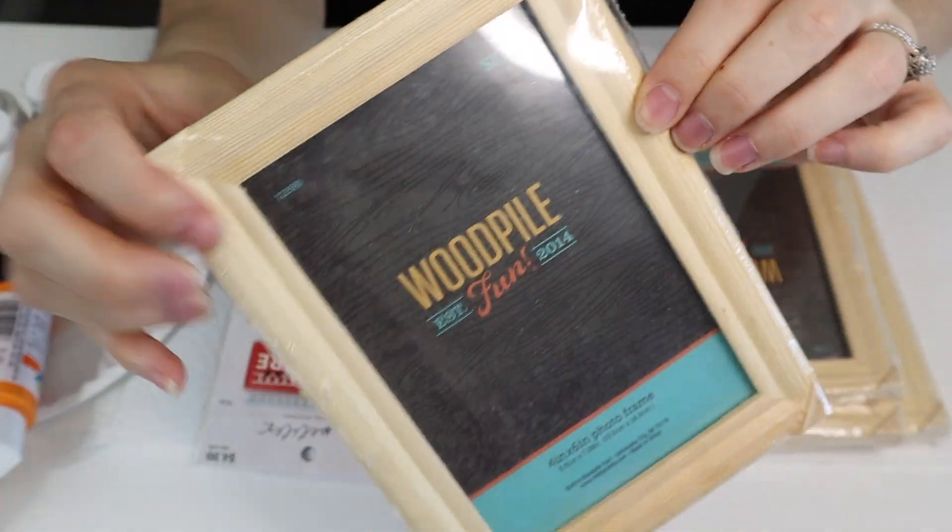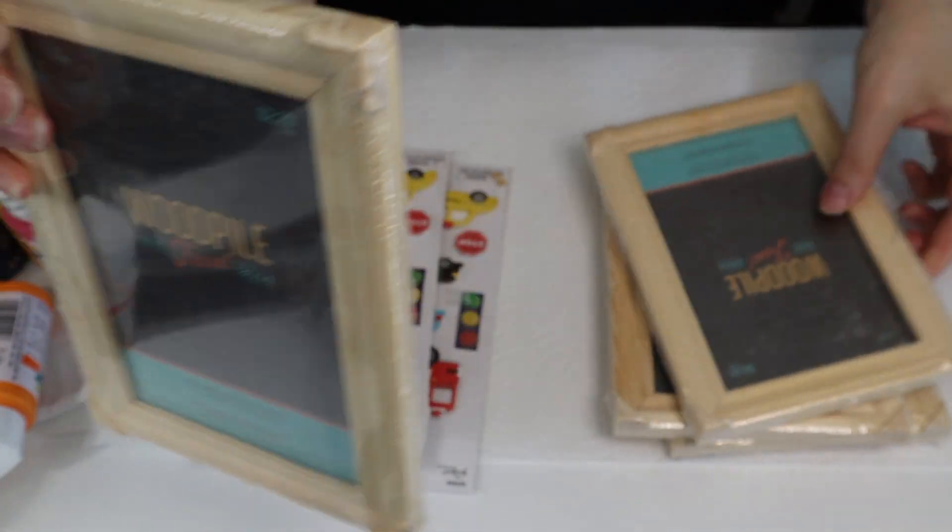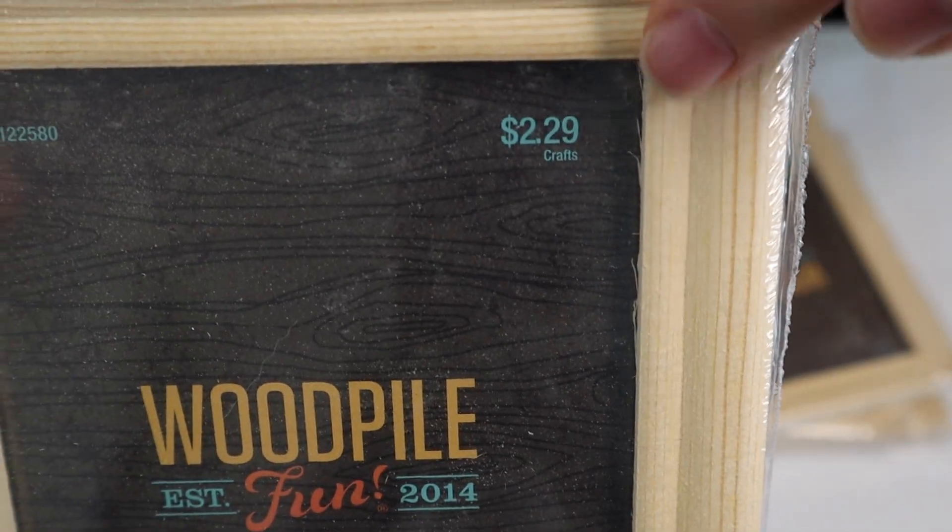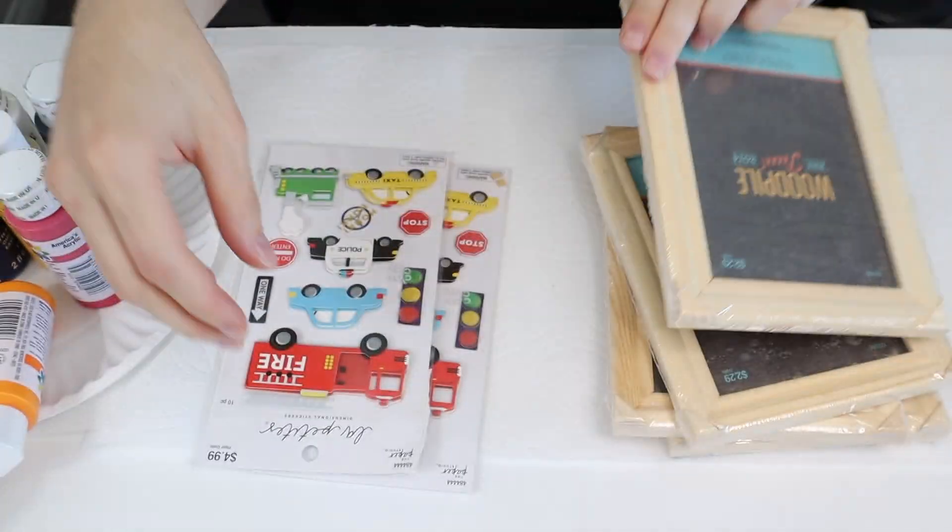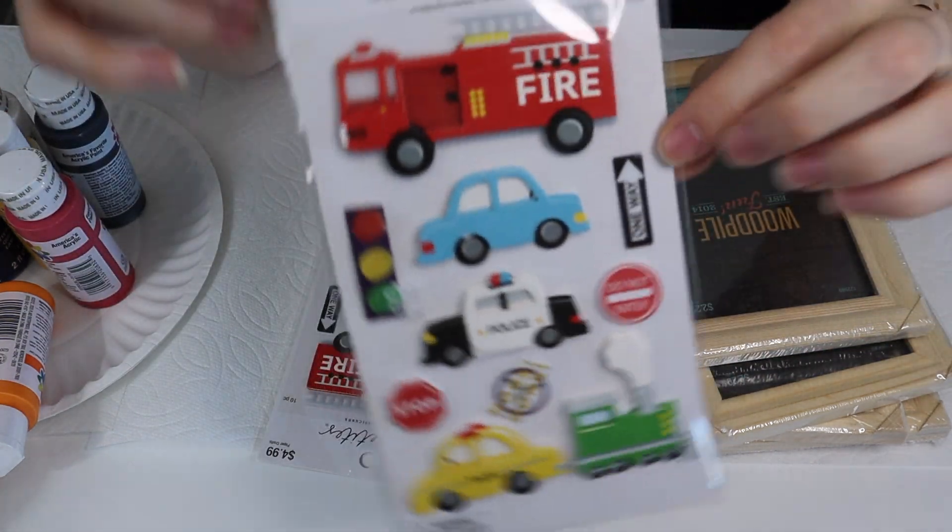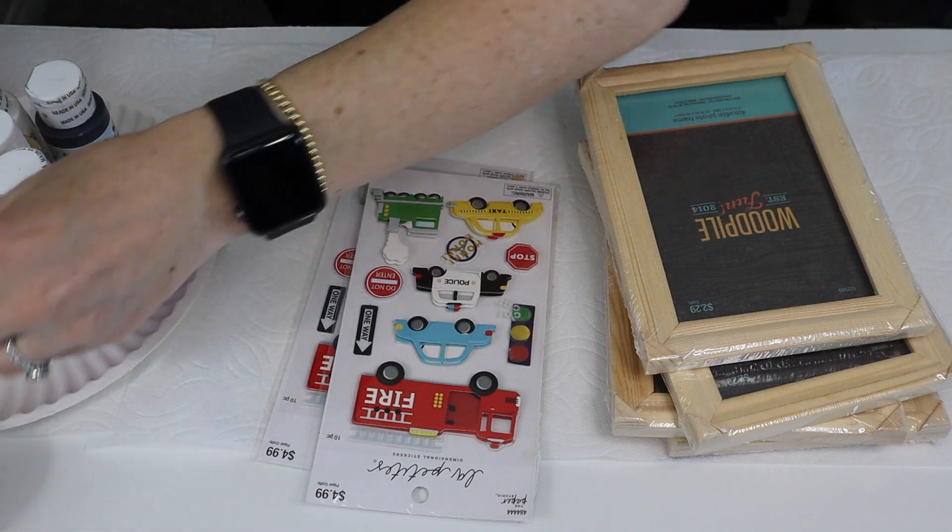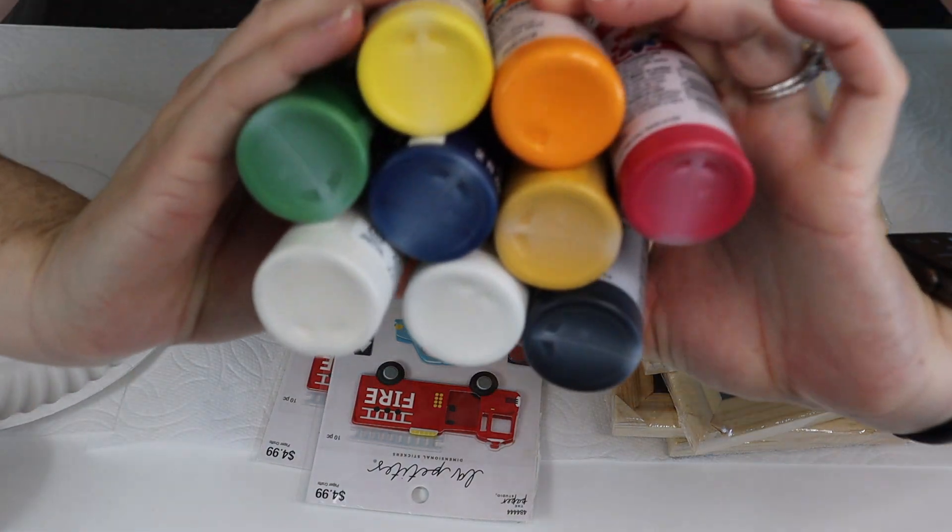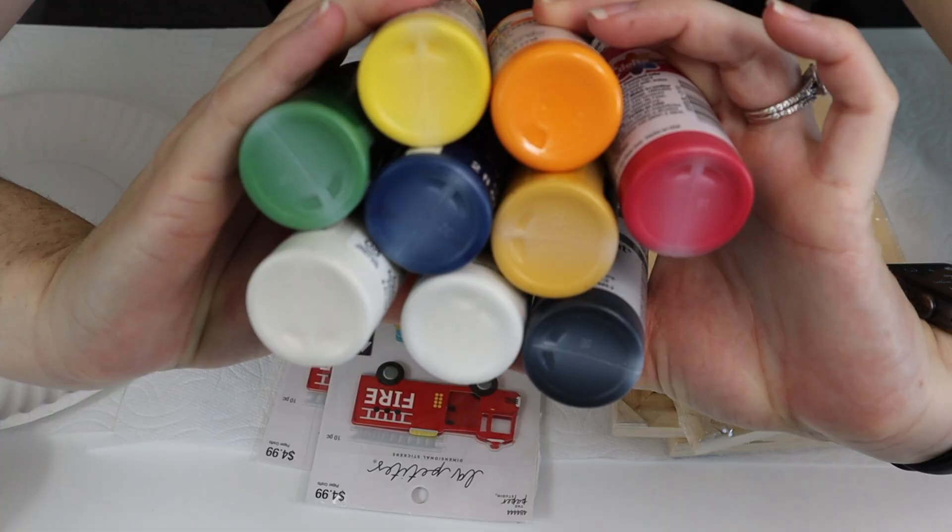Next up, these next two ones are super simple. I got these wood frames from Hobby Lobby. I got a pack of four. They're $2.29 each, but I think the pack of four was like $5 half off, so not too bad. And then I got two packs of these little transportation stickers from Hobby Lobby, also half off, as well as some paint.